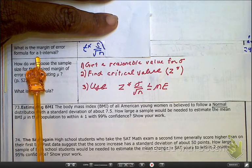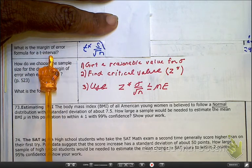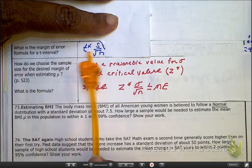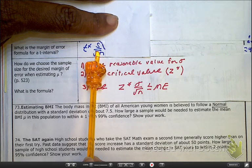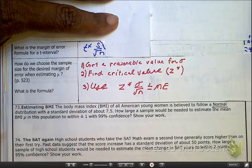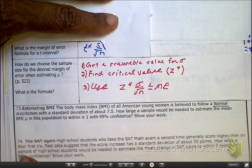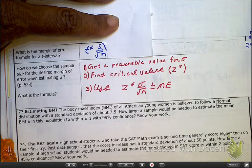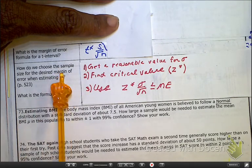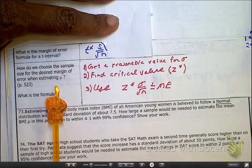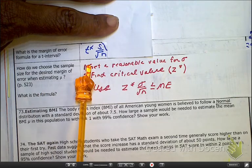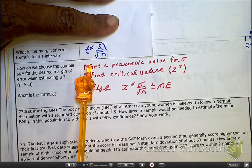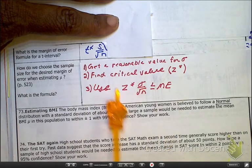As we remind ourselves, here is the margin of error for the t-interval. It is t* times the standard deviation of the sample divided by the square root of n. So it seems reasonable that if I'm going to be finding a sample size given the margin of error, I would use this formula also. But the reality is, no, we aren't. First, we're going to be using a z.